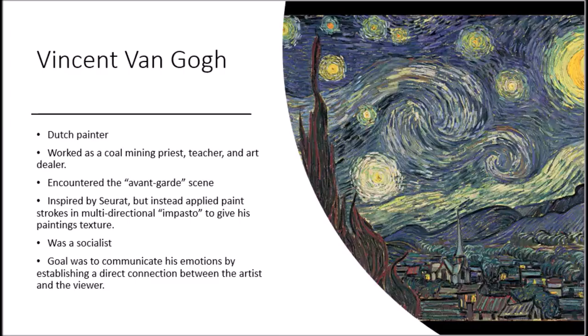Another Post-Impressionist painter is Vincent van Gogh. Among the most famous of the Post-Impressionist artists, he is a Dutch painter who transformed his artistic sources into a highly expressive personal style. Van Gogh worked as an art dealer, a teacher, and an evangelical preacher before deciding to enter the field of art. He studied briefly in Brussels, The Hague, and Antwerp. Van Gogh adapted Seurat's pointillism by applying brilliantly colored paint in multidirectional strokes of impasto — make sure you have this in your notes — which is a thick application of paint to give his pictures turbulent emotional energy and a palpable surface texture.